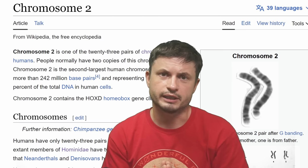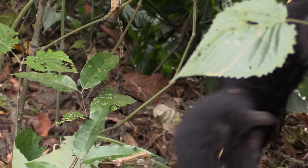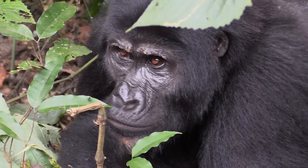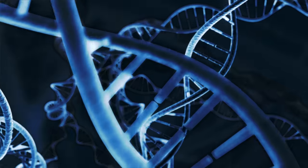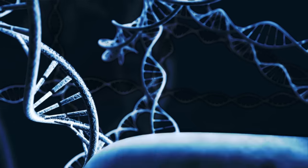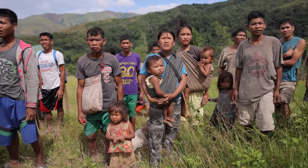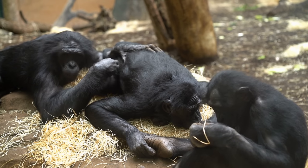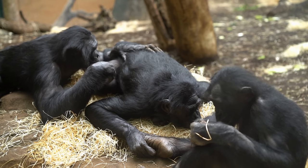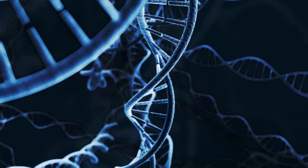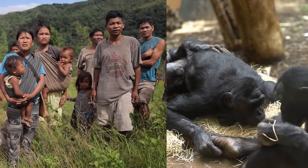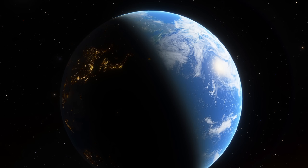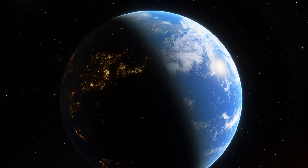We believe Denisovans and Neanderthals had this chromosome 2 as well, but other great apes do not. Gorillas have 24 chromosomes and their chromosome 2 is relatively small. We believe this was a result of a merger of two smaller chromosomes that suddenly created a new evolutionary path for human ancestors — but not for chimpanzees or other apes. Chimps actually have two smaller chromosomes with very similar genes that we now think were joined to create our chromosome 2, making this one of the biggest differences between our species.